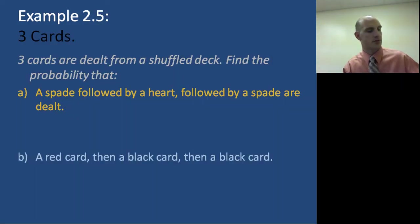All right? I'm going to give you this one to do on your own. Okay? So three cards are dealt from a shuffled deck. Find the probability that a spade followed by a heart followed by a spade are dealt. Okay? So you have three events there. And then you want to find the probability that a red card, then a black, then a black. So take into consideration each of those three separate events in those two examples.